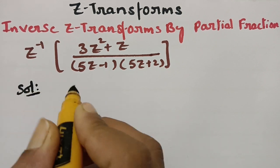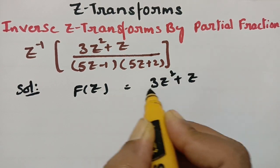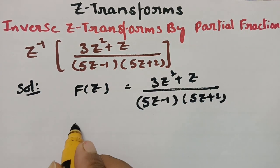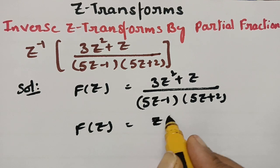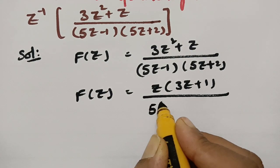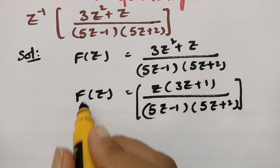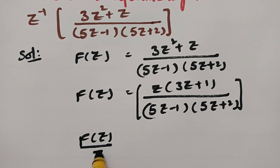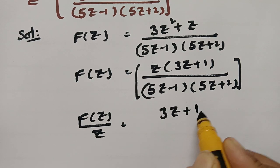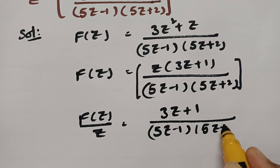First, I am taking F(Z) = (3Z² + Z) / ((5Z - 1)(5Z + 2)). Taking Z common from the numerator gives F(Z) = Z(3Z + 1) / ((5Z - 1)(5Z + 2)). Sending Z to the other side, F(Z)/Z = (3Z + 1) / ((5Z - 1)(5Z + 2)).